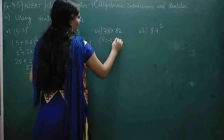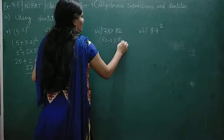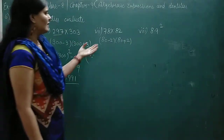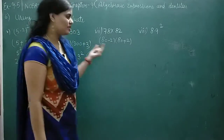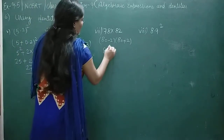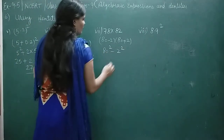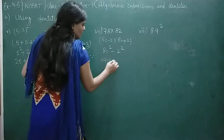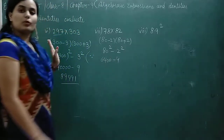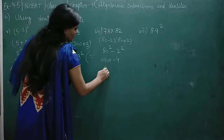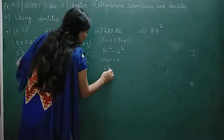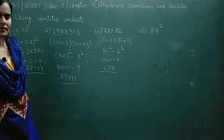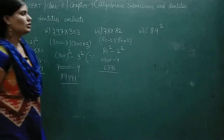Next: 78 × 82. You can write it as (80 - 2)(80 + 2). This is the simplest identity — (a - b)(a + b) = a² - b². So 80² - 2² = 6400 - 4 = 6396.